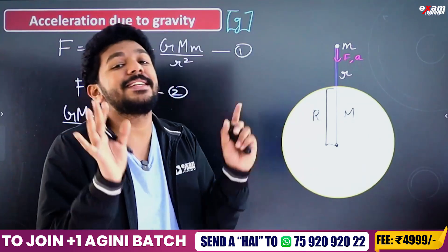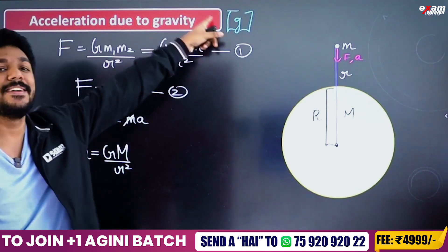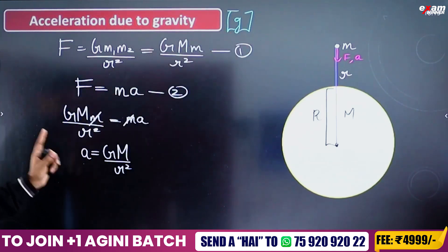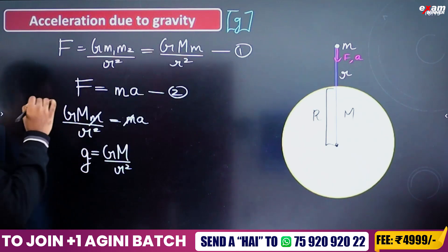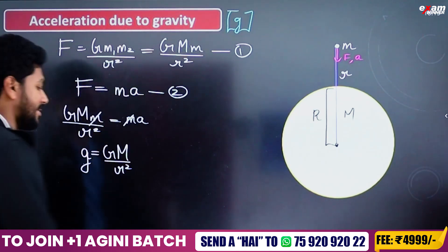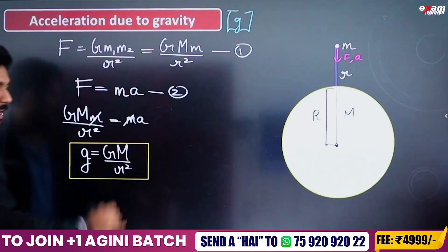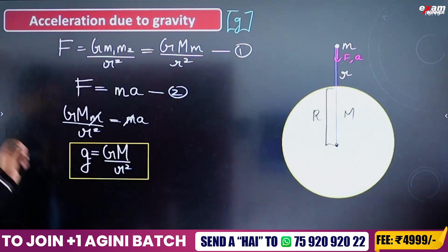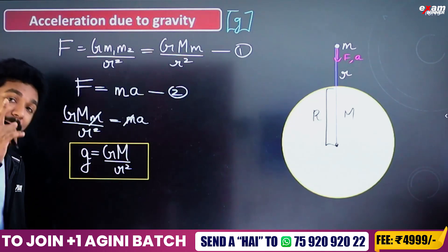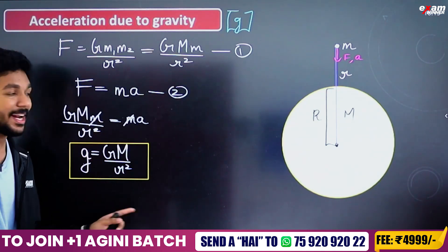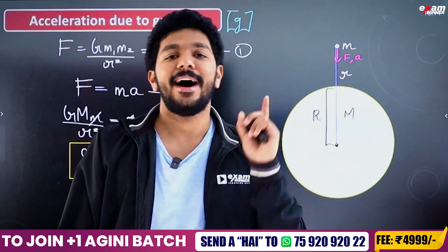What is acceleration due to gravity? Acceleration due to gravity, g, is equal to G times the mass of the Earth, divided by R squared — that is, g equals GM by R squared.